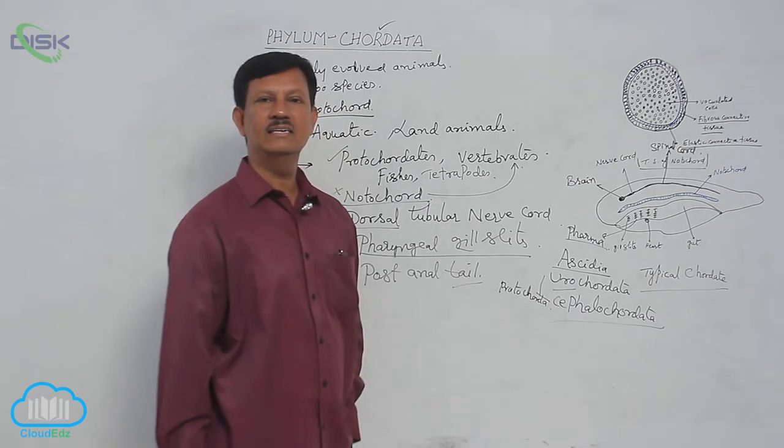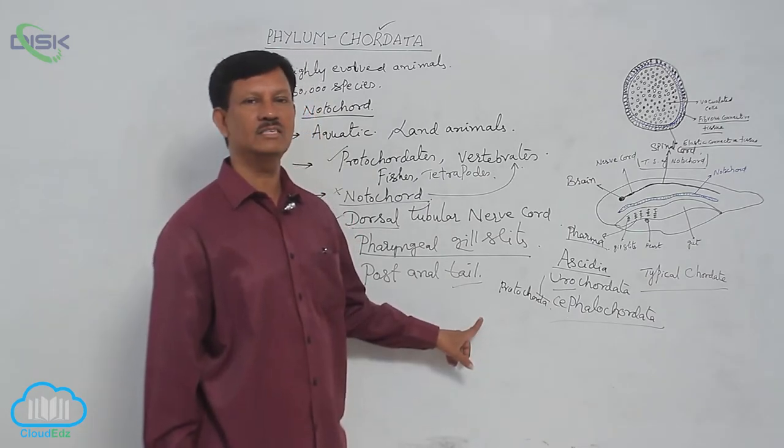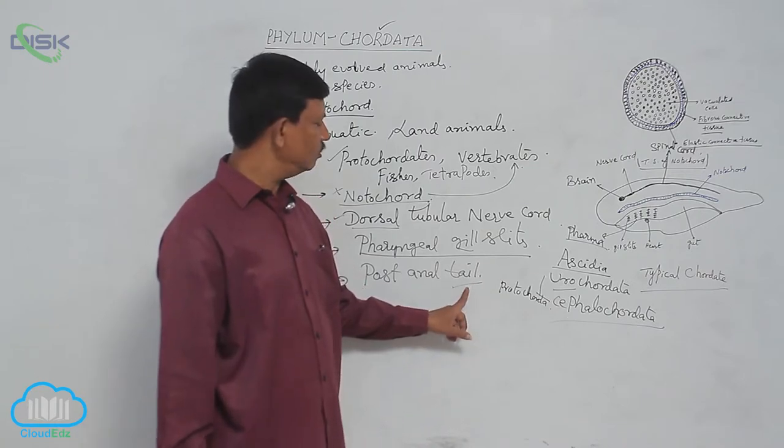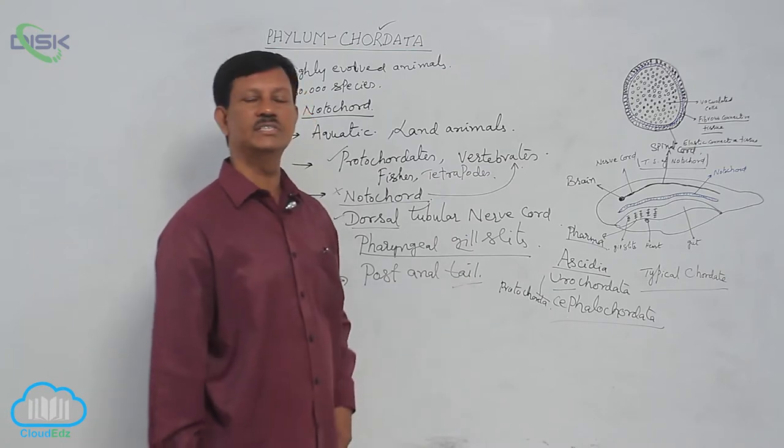In the tail, coelom and visceral organs are absent. No visceral organs, no coelom is present. But muscles are present and also skeletal elements are found in the tail region. Their main function is: